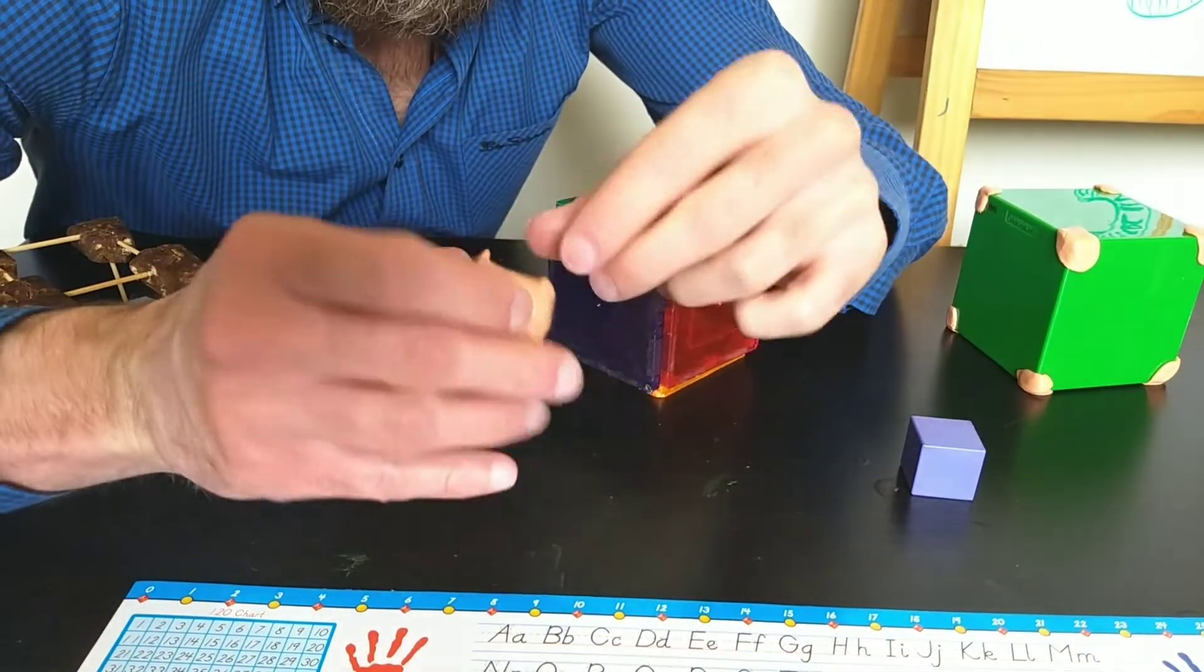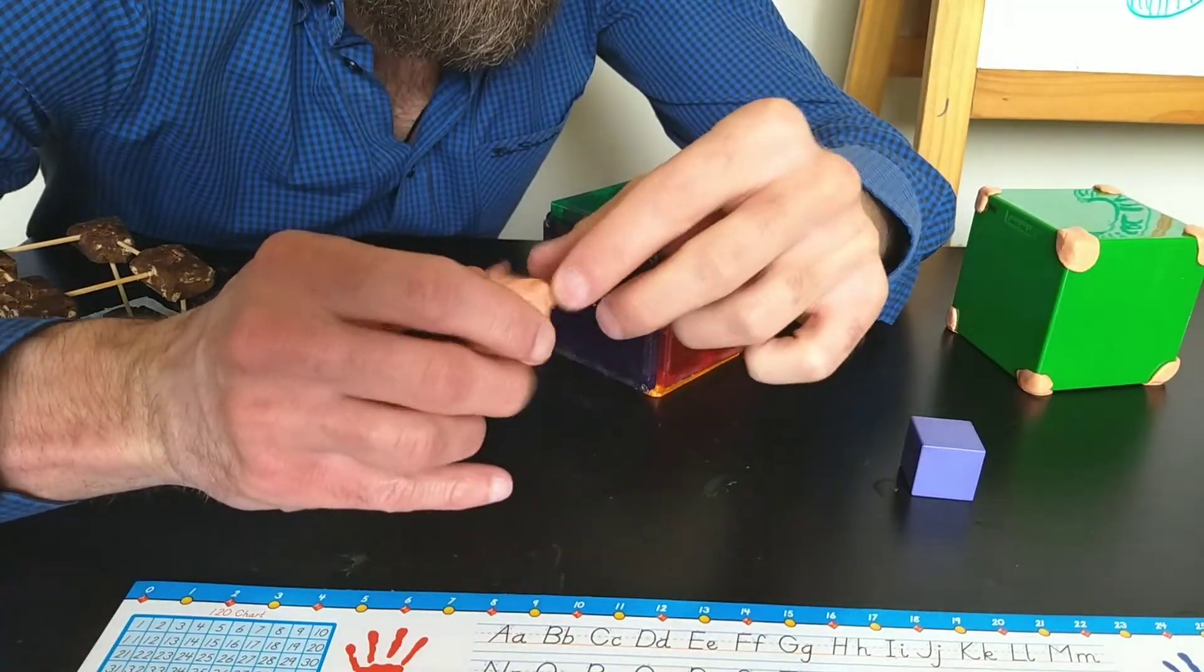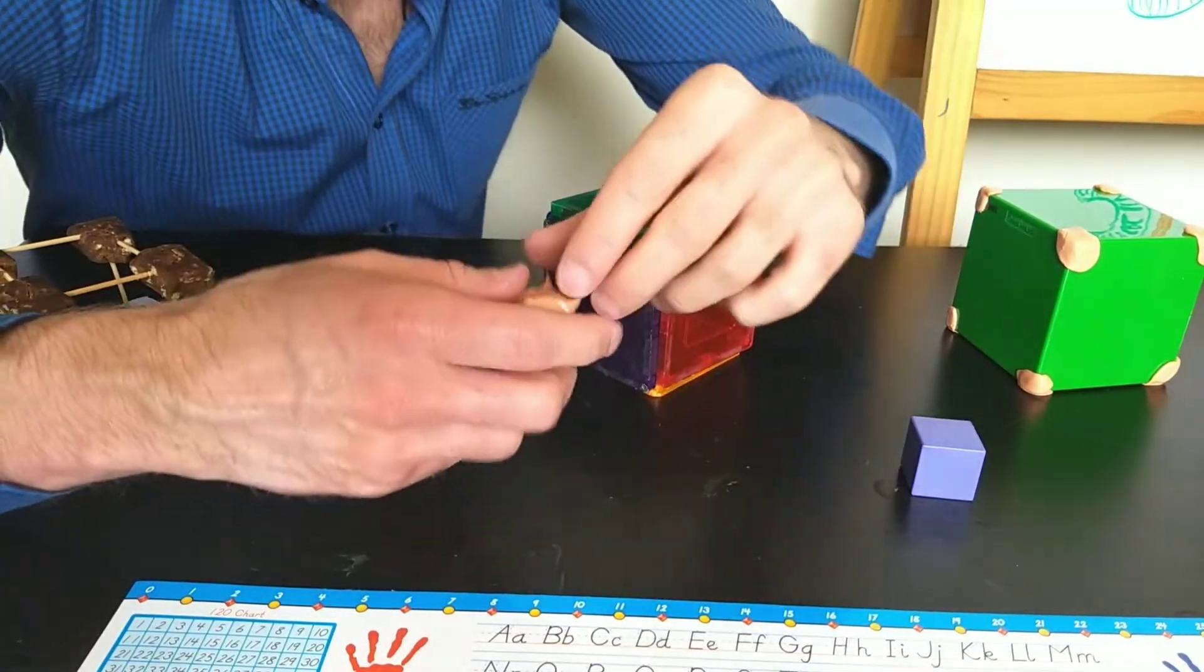And I can even smush it to recount. 1, 2, 3, 4. You get the idea. 3D shapes.